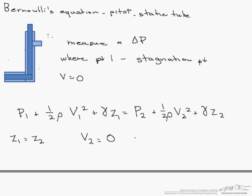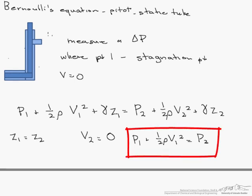What we are now left with is that P1 plus one half rho V1 squared equals P2. We can use this equation either to solve for a difference in pressure or to solve for an actual pressure given the other pressure.